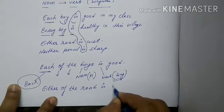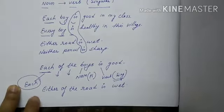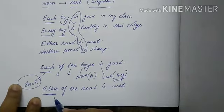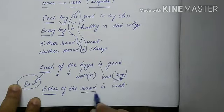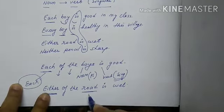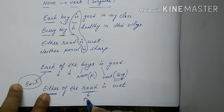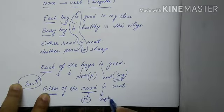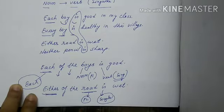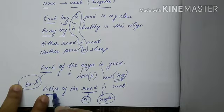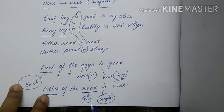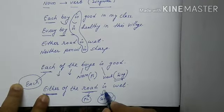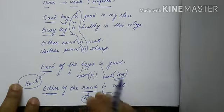Here I have written 'road is wet.' The subject of this sentence is 'either' — so after 'either', the noun we see should be plural when 'of' is used, but the verb should remain singular, because the subject is still 'either'. When 'of' and 'the' follow each, either, or neither, noun becomes plural but verb stays singular. Let us take one more example.